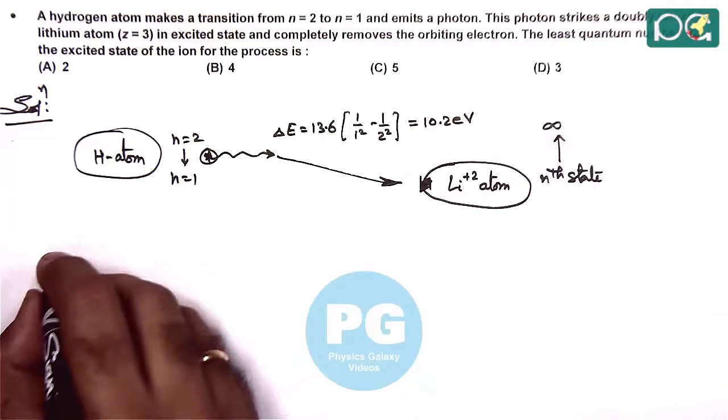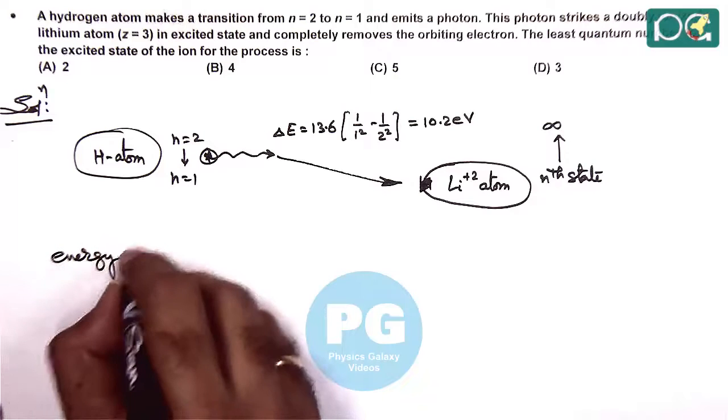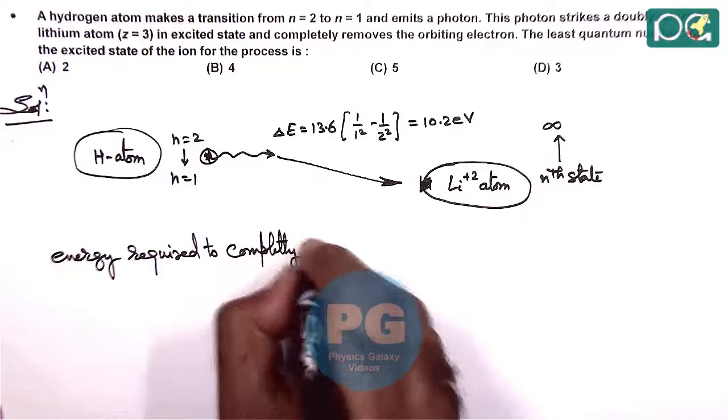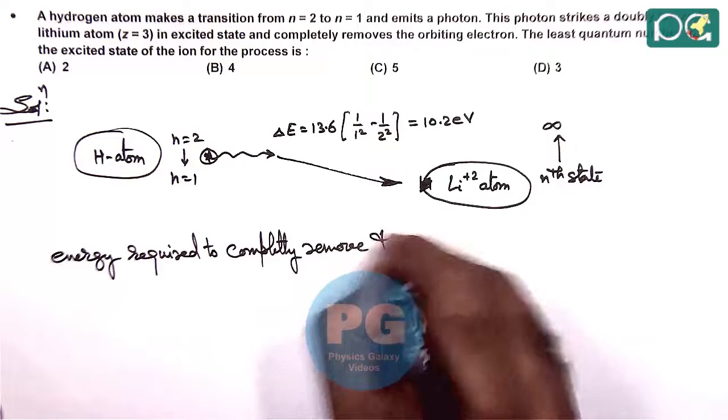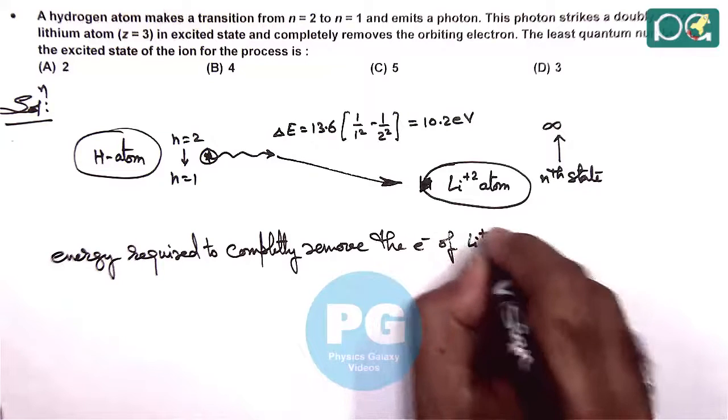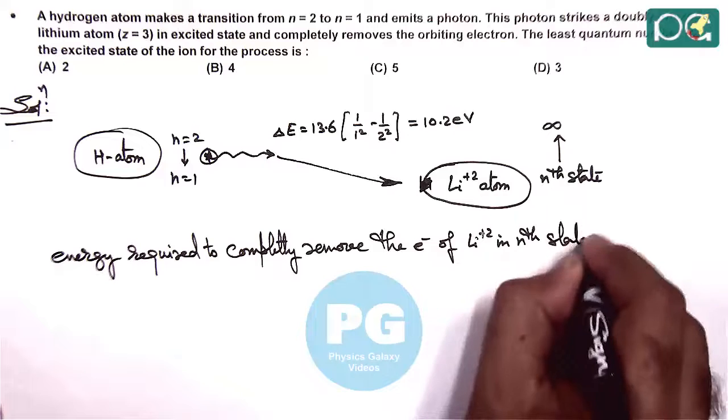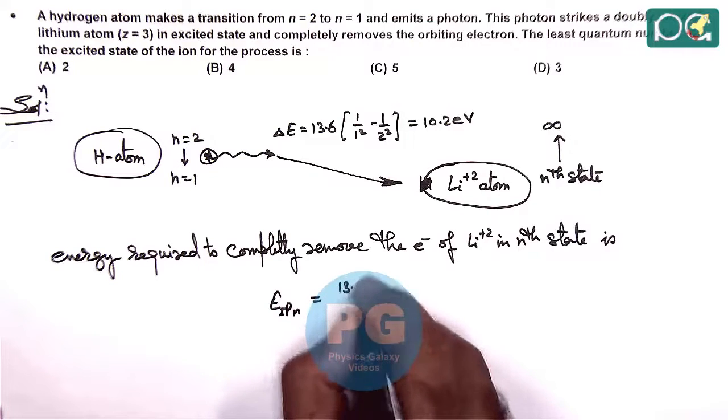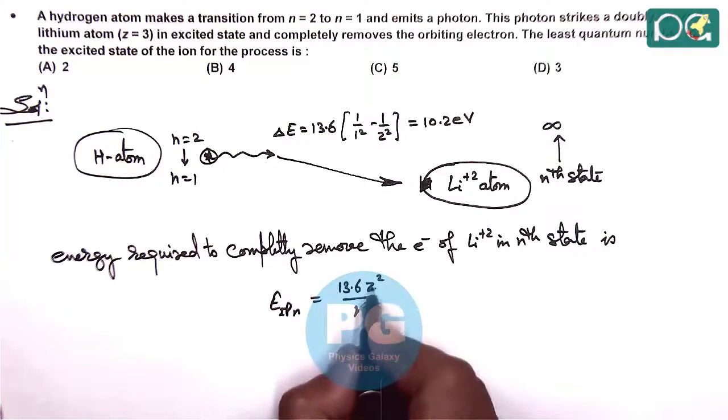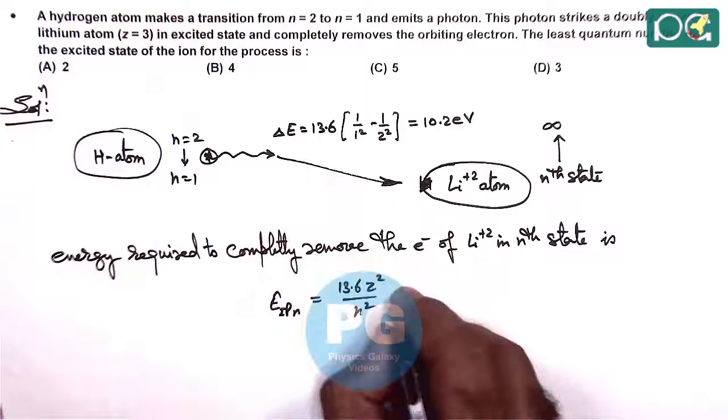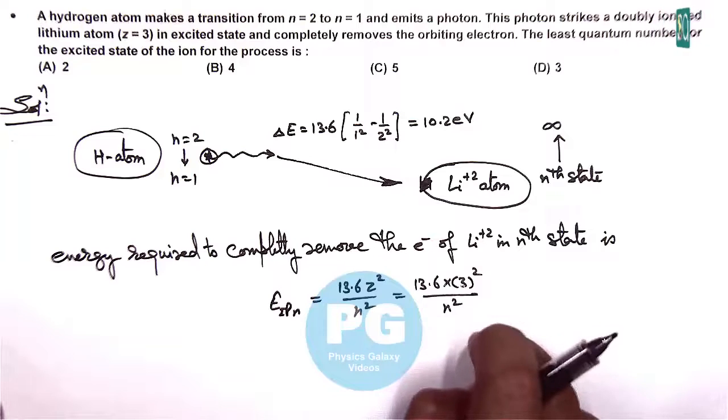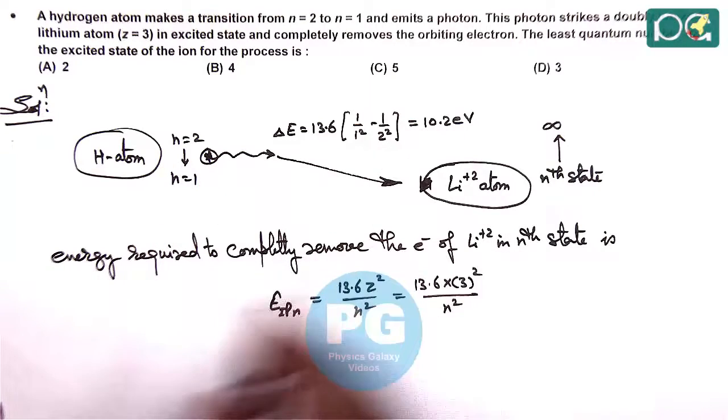We can write the energy required to completely remove the electron of Li²⁺ in the nth state. This is the ionization energy for the nth state: E_ip = 13.6 z²/n². Here z=3, so this will be 13.6 × 9/n². This energy has to be supplied by the photon which has energy 10.2 eV.